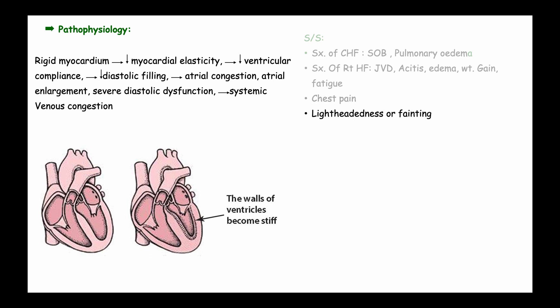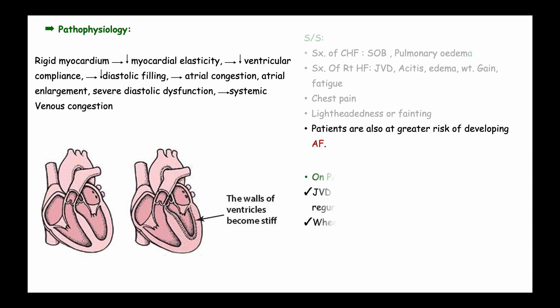Patients may also experience lightheadedness or fainting. They are at greater risk of developing atrial fibrillation and thromboembolism, with atrial fibrillation usually due to conduction abnormalities. On physical examination, there will be jugular venous distension, systolic murmur from mitral and tricuspid regurgitation, wheezing and rales on auscultation, and S3 heart sounds.